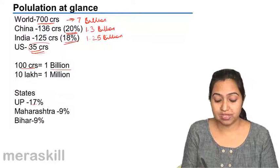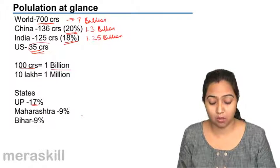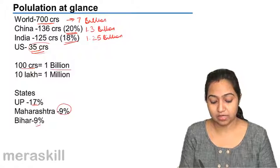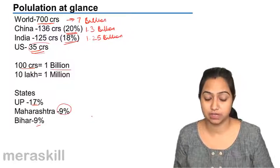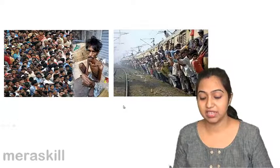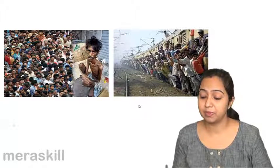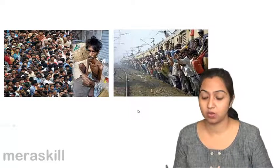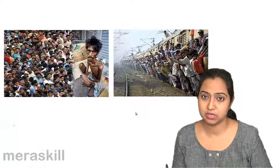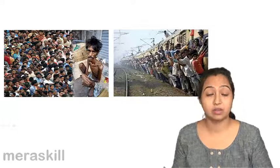State-wise in India, UP is the most populated state with 17% of our population living there. Maharashtra has a population of 9%, and Bihar is also 9% of the Indian population. This is such a common sight — you see so many people. This is the problem that we are facing. Everywhere, the number of people is much more than the capacity can hold. There is a lot of strain on the natural resources and the man-made resources that are available. The man-to-resource ratio is far more than what should be.